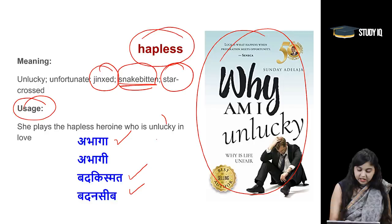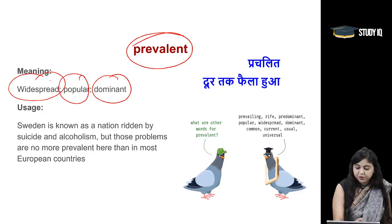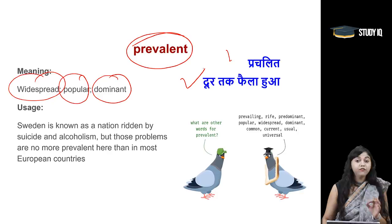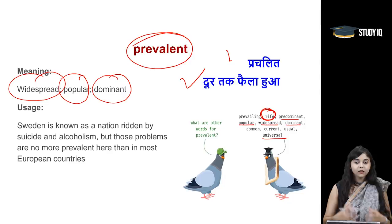Moving on to the next word: prevalent. Prevalent kaafi baar istamal kiya jata hai, hum common language mein bhi iska prayok karte hai. Prevalent shabd ka arth hota hai widespread — something that is very popular, dominant, widespread hai. Bohut prachalit hai, dur tak fayla hua hai. Uske liye hum prevalent shabd ka prayok karte hai. So: popular, widespread, dominant, universal, predominant. Rife shabd ka bhi prayok kya jata hai — 'the problem is rife.'